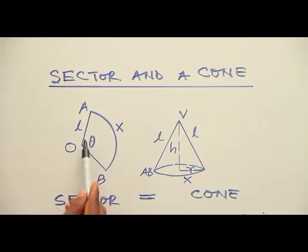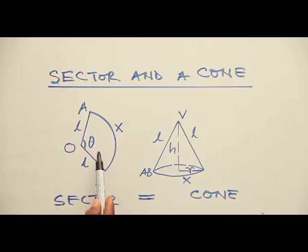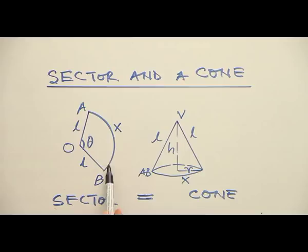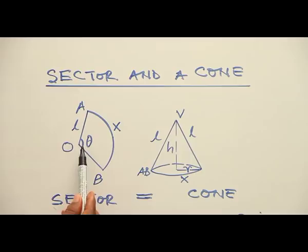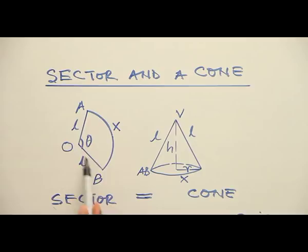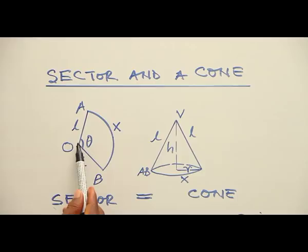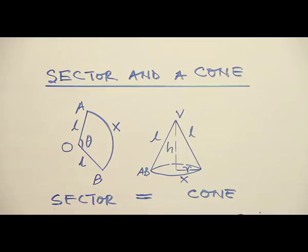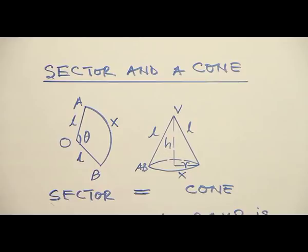Here is an illustration of a sector. A sector is part of a circle. O, A, S, B is describing a sector of the circle. A, S, B is the arc of that sector, and the arc is subtending an angle theta at the center. From O to A and from O to B is the radius of the circle, represented by the letter L in this case.